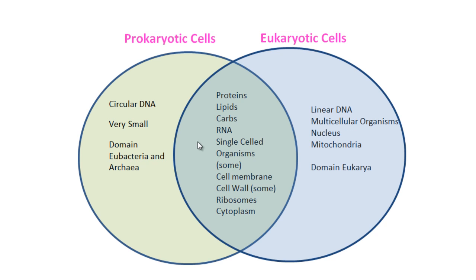Prokaryotic cells are very, very small — even under a light microscope they are extremely small. There are single-celled organisms in both prokaryotic and eukaryotic categories. Most prokaryotic cells are single-celled, and the kingdom Protista, by definition in the eukaryotic cells, are single-celled. Cell membranes are found in all cells, so that's a unifying characteristic. Cell walls are found in all prokaryotic cells and in some eukaryotic cells, specifically plants and fungi. Ribosomes and cytoplasm are both found in all kinds of cells.